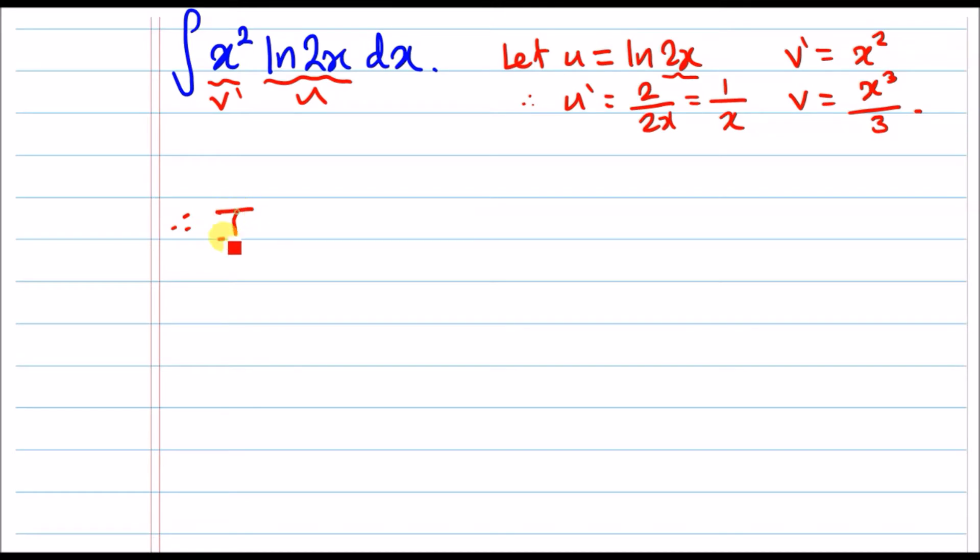Now at this stage, we're going to use the bypass method and in this case, bypass tells us that we have a u times a v and we're going to subtract it by the integral of u prime times v. So just go ahead and pop everything in. So for the u, we've got ln 2x and for v, we've got x cubed over 3. Now we're going to minus against the integral of the bottom terms we've got. So we've got the u prime, which is 1 over x to the integral of 1 over x times x to the power 3 over 3.